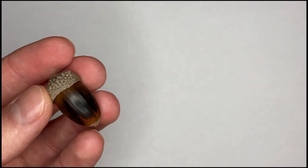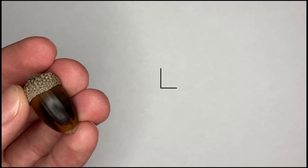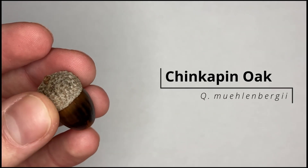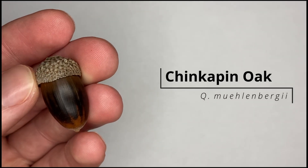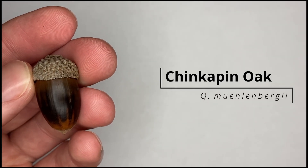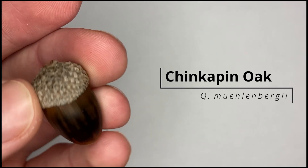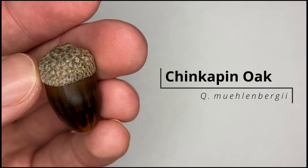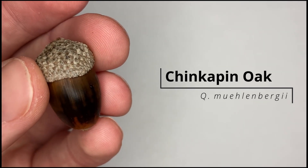Our third member of the white oak group is the chinkapin oak, otherwise known as Quercus muehlenbergii — which is in fact a tongue twister. The cap of this acorn has warty scales, but the bumps aren't as prominent as those on white oak.